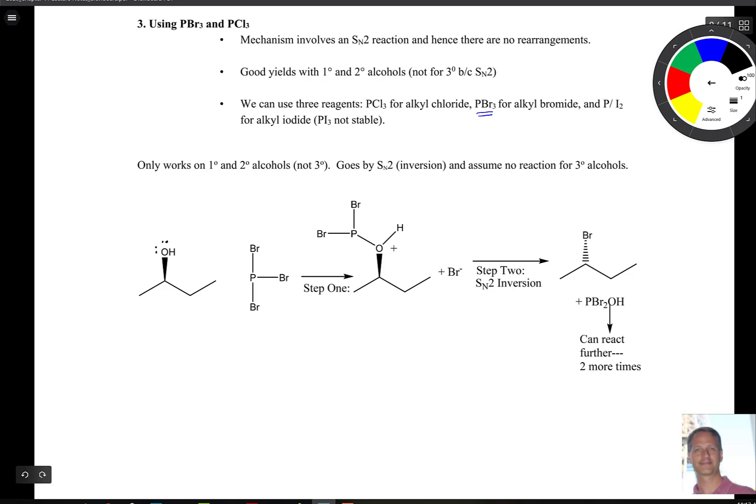So we're going to react this alcohol, putting a lone pair on your phosphorus. This guy is going to come around here, do this, and then we'll kick off bromide. And you'll have a plus charge right here. So we'll circle that guy, put a lone pair on just like that, and you're still going to have a lone pair on your phosphorus. Now this guy right here is now going to be your leaving group. So then step two, you have bromide coming around, attacking here, leaving group taken off, and you are left with your product. So this guy is going to react plus PBr2OH, which can react two more times because it has two more bromine groups on it.